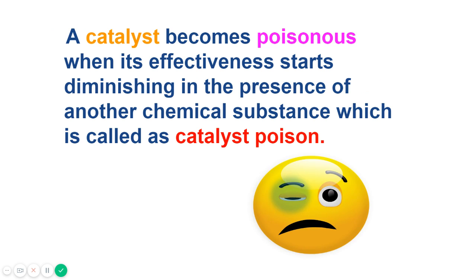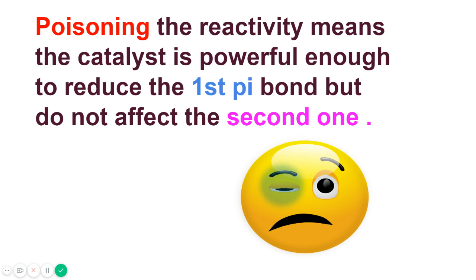A catalyst becomes poisoned when its effectiveness starts diminishing in the presence of another chemical substance which is called catalyst poison. So poisoning the reactivity means the catalyst is powerful enough to reduce the first pi bond but does not affect the second one.